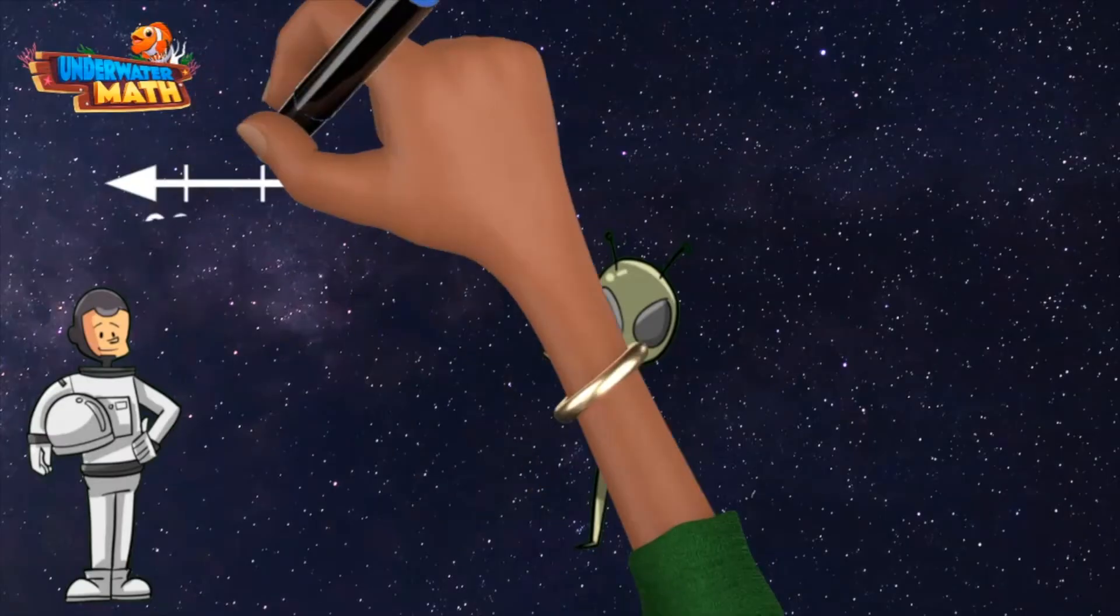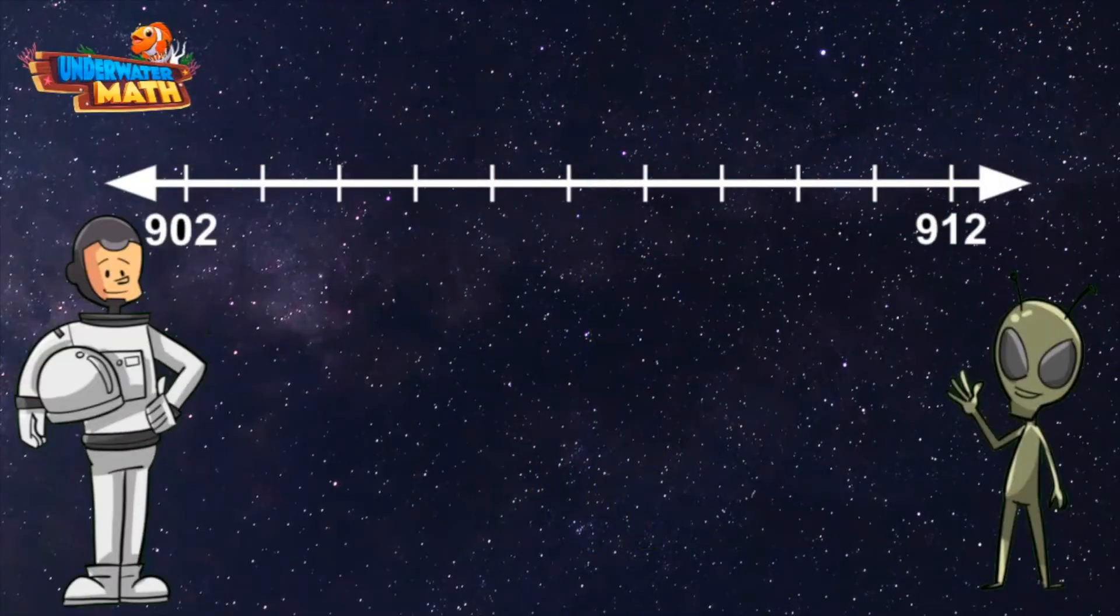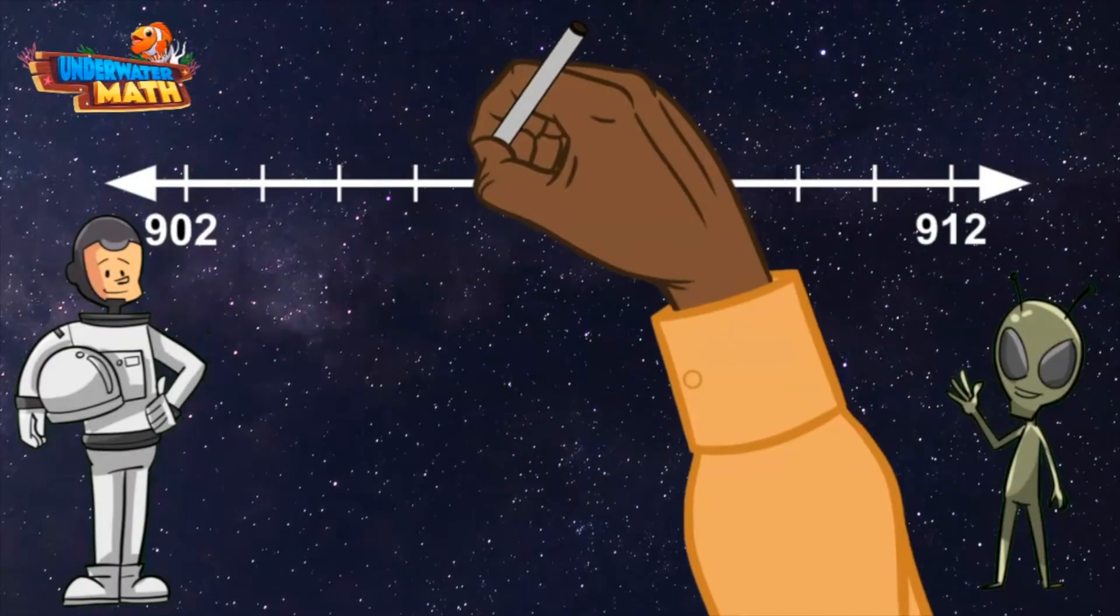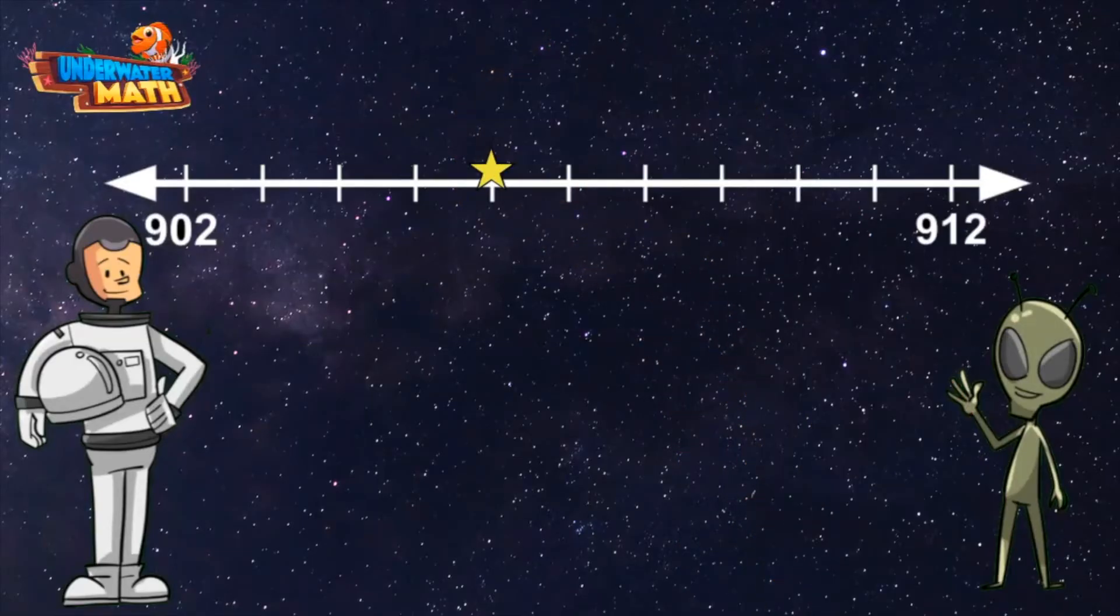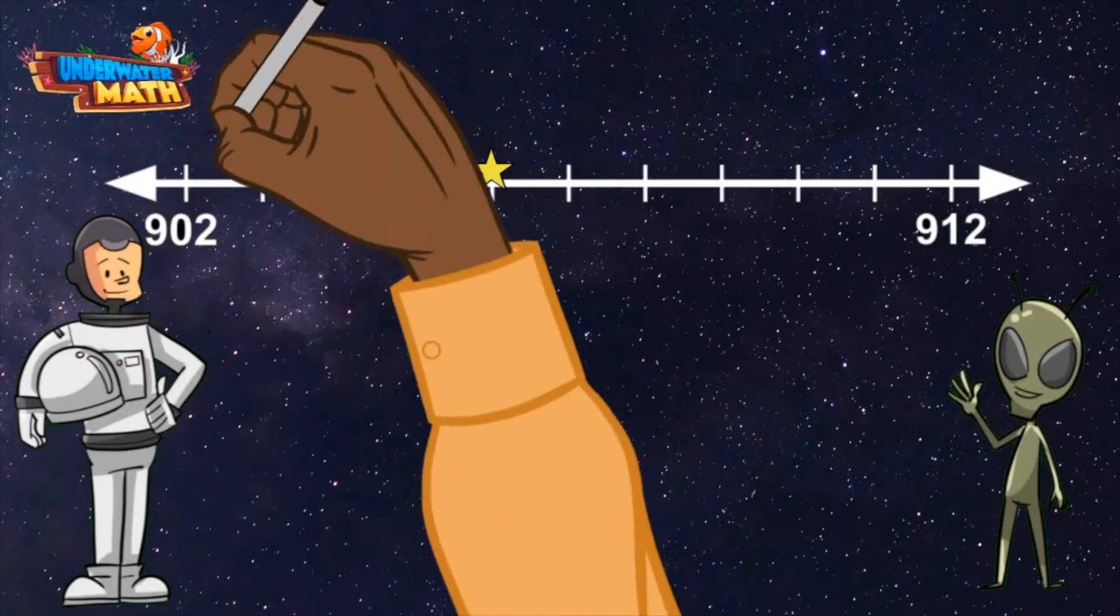That starts at 902 and ends at 912. You are the best, thanks! Now I'm going to put the star right here. What number does the star represent this time? Let's start at 902 and count up: 903, 904, 905, 906.